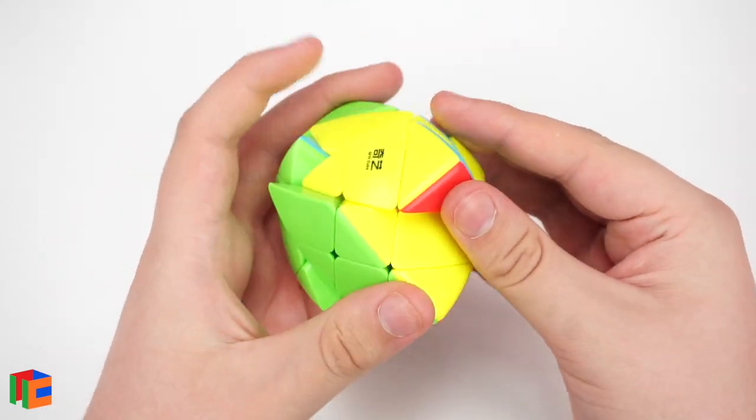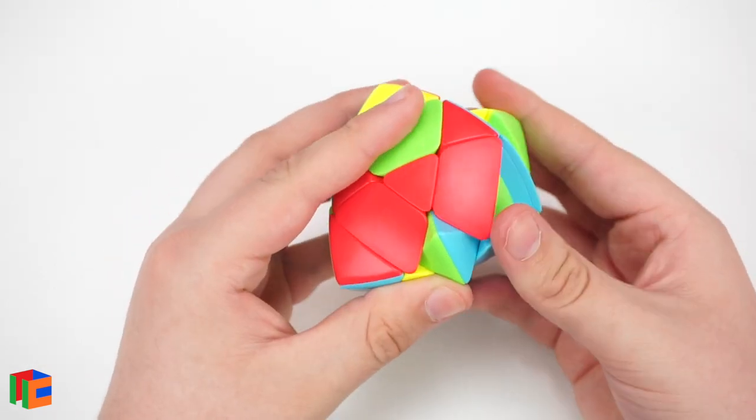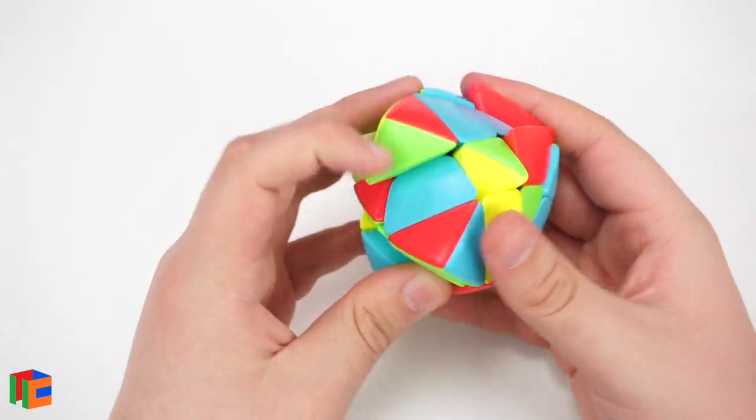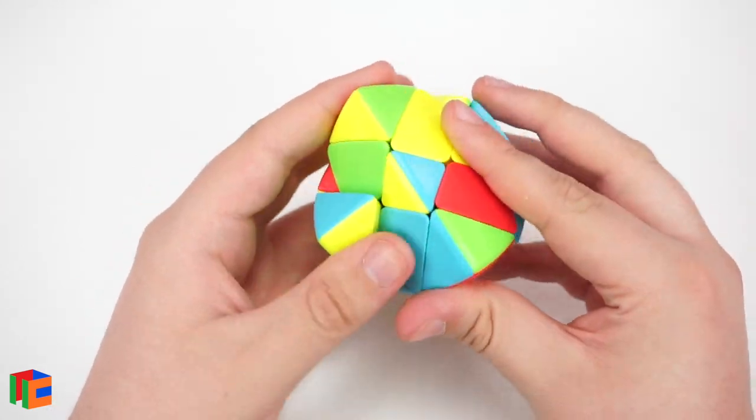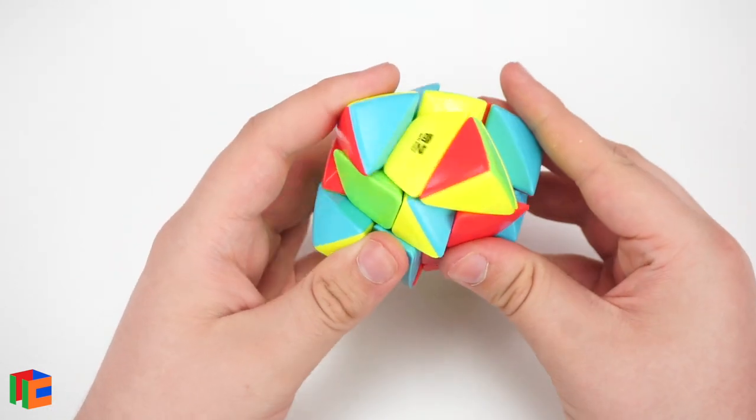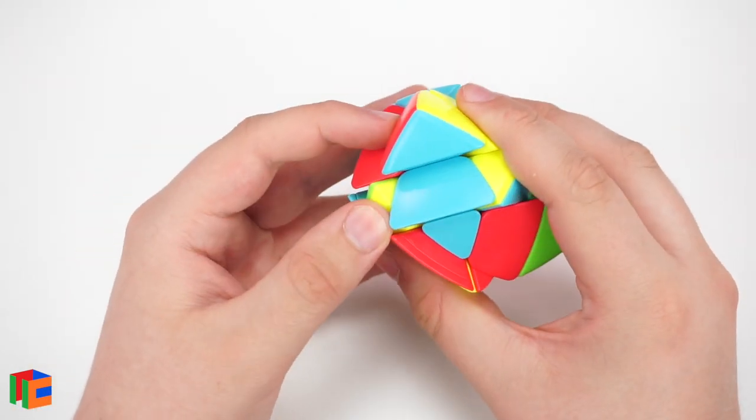Let's go ahead and give this a solve real fast. Of course, it solves just like a 3x3, although there is some hidden parity with corner orientation and stuff like that. That can be a little bit of a pain to deal with. So hopefully we get lucky and we don't have to deal with it, because I'm not sure if I remember how to do it. It doesn't really matter what side we start on. I'll just start with green and yellow here.